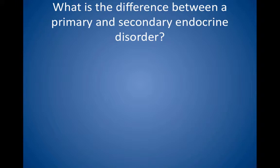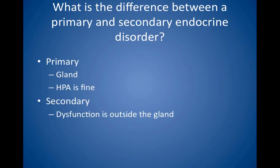What is the difference between a primary and secondary endocrine disorder? In primary disorders, the problem is in the gland; the hypothalamic-pituitary axis is functioning appropriately. In primary hypothyroidism, for example, the thyroid gland does not function properly, but the pituitary and hypothalamus respond appropriately. Therefore, thyroid hormone is low, but TSH and thyroid releasing hormone are high — the appropriate response to low levels of thyroid hormone.